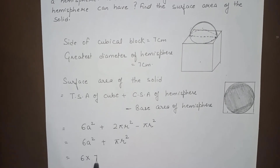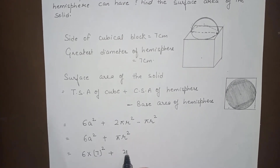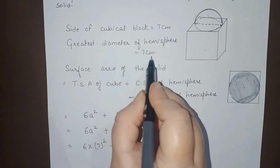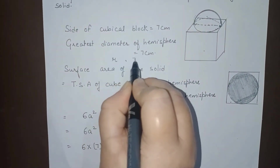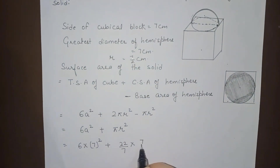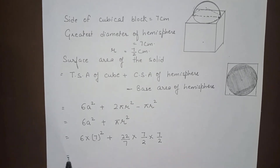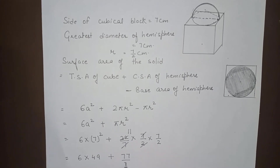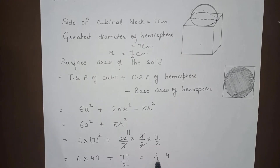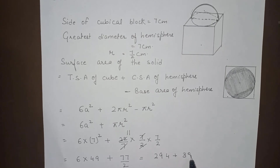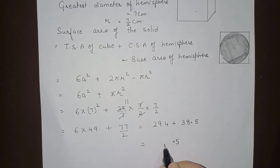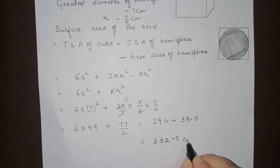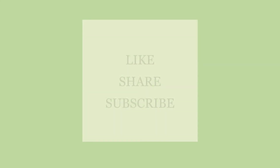Substituting values: a = 7 (the side of the cubical block), and since the diameter is 7 cm the radius is 7/2 cm. Using π = 22/7, we get 6 × 49 + (22/7) × (7/2) × (7/2), which gives 6 × 49 = 294 and (22/7) × (49/4) = 38.5. So the surface area of the solid equals 294 + 38.5 = 332.5 cm².